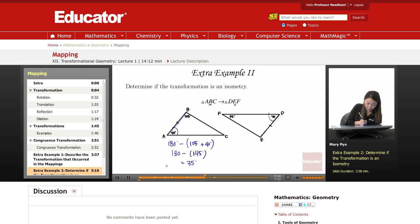So measure of angle C is 35 degrees. Now measure of angle E is going to be 180 minus 35 plus 40. Now we don't have to solve for that because we know that this is 35.